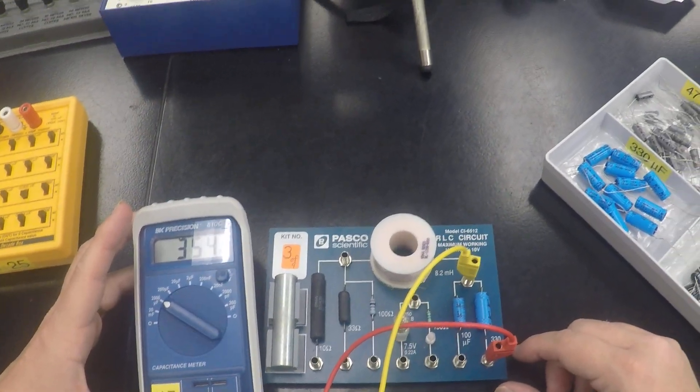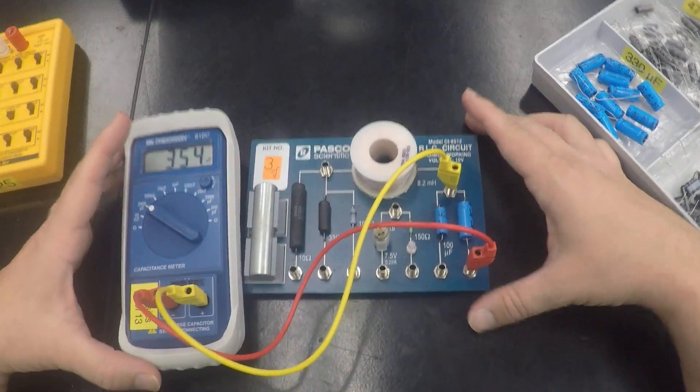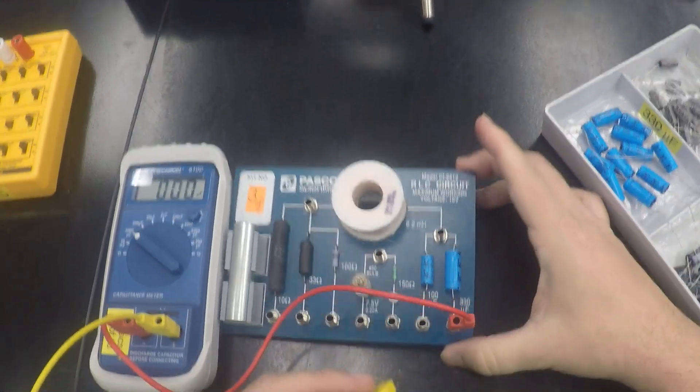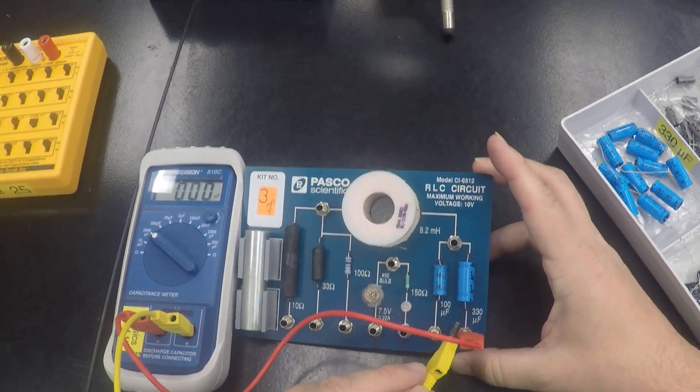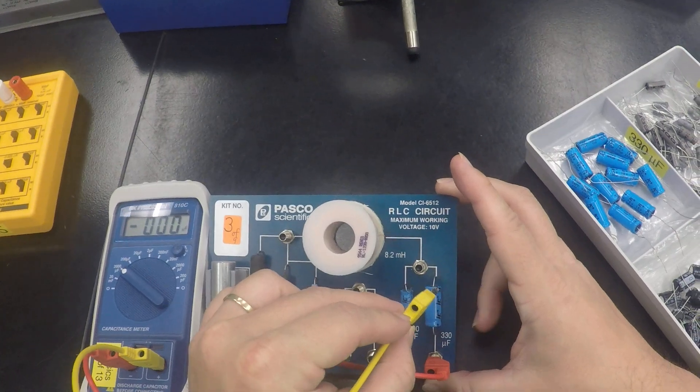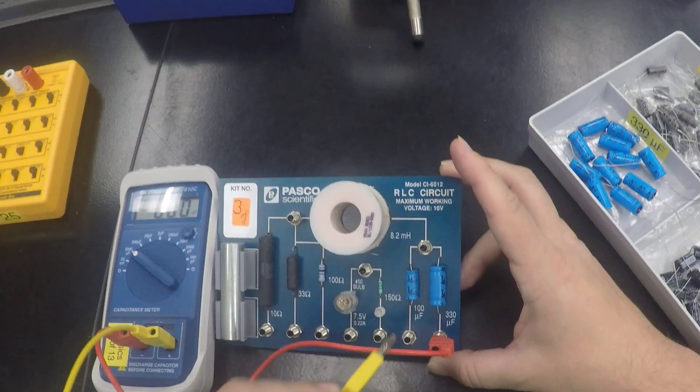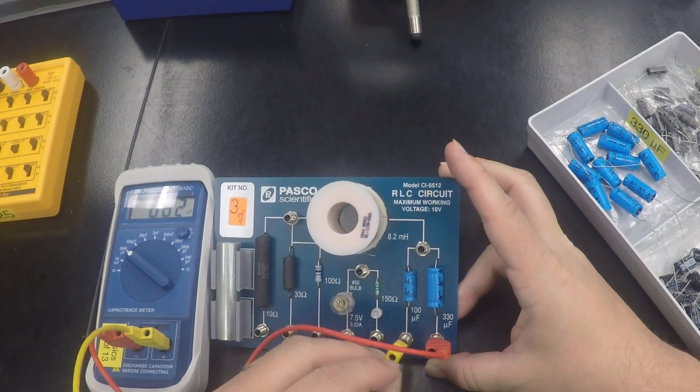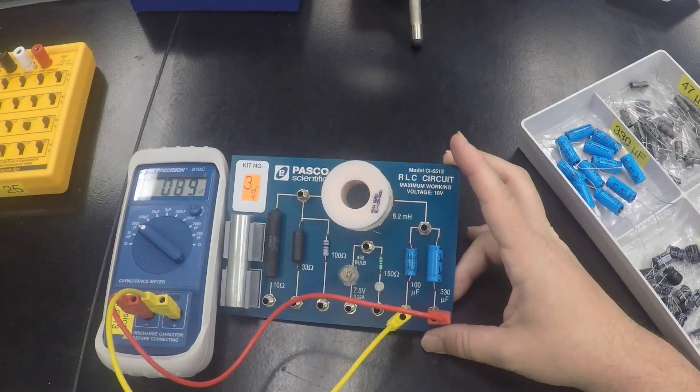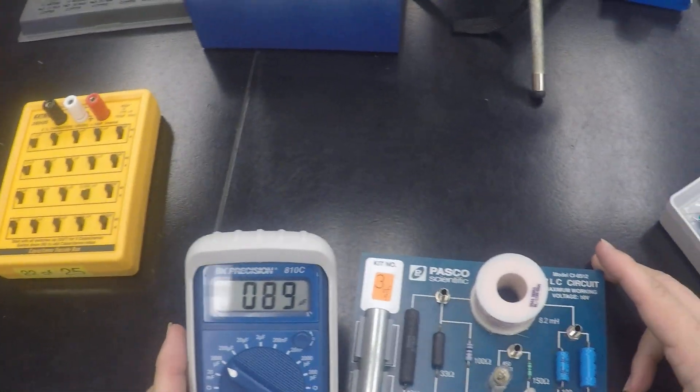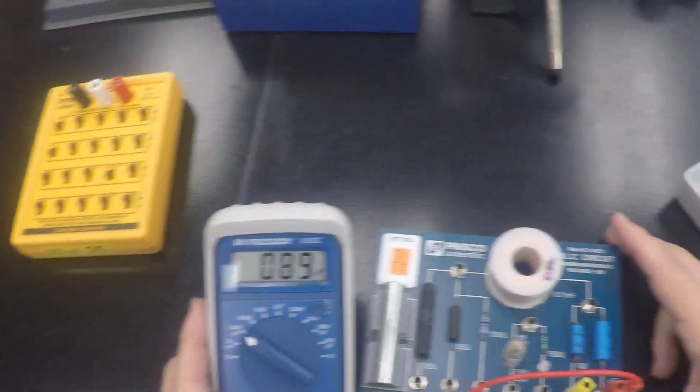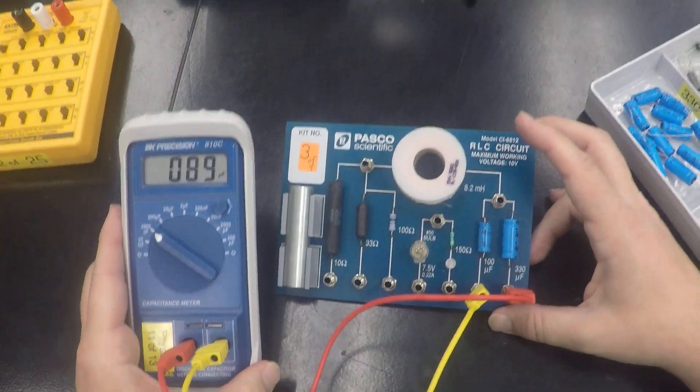But the question is, what if we connected both of these up together in series? Now we can do that if I plug in, and you can see the way the indication is showing us, is that if I plug into here, that means that those two are now in series with one another. And let's take a look at the reading. Notice it says 89 microfarads. So what's going on here?